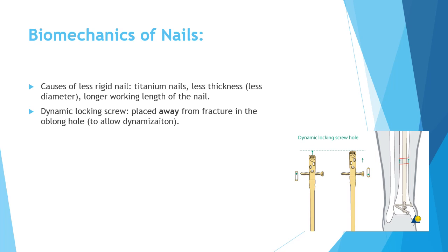An important concept is the dynamic screw hole — where to put the screw. This picture is from the AO website. You have a fractured tibia that is slightly displaced, and you want to apply a screw in the dynamic hole. The simplest way to remember: the screw has to be away from the fracture. This is the proximal part of the nail, so to put the screw correctly, it has to be away from the fracture — in the upper or proximal part of the hole.